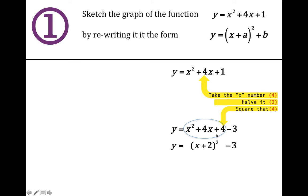So the whole thing x squared plus 4x plus 4 minus 3 I've rewritten as x plus 2 all squared minus 3.